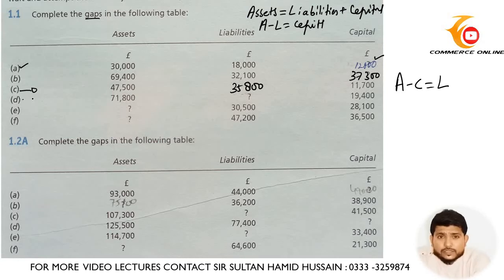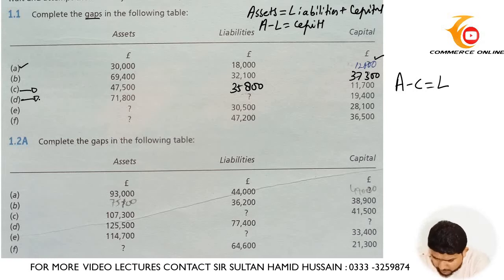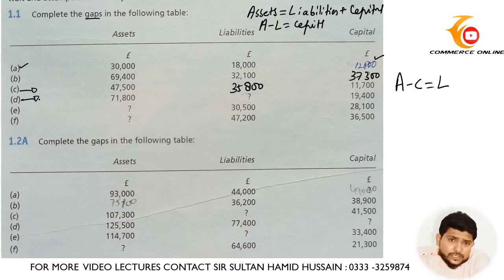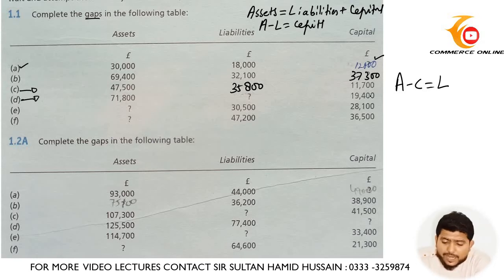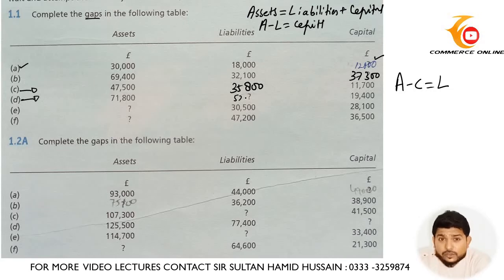In question 1.1 part D, assets are 71,800 and capital is 19,400. You need to subtract 71,800 minus 19,400 and you will get liabilities of 52,400.